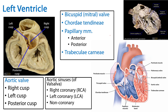So we have discussed the structures that are peculiar to the left ventricle, as well as the specifics of the aortic valve, the cusps, and the aortic sinuses. Thank you very much for your time.